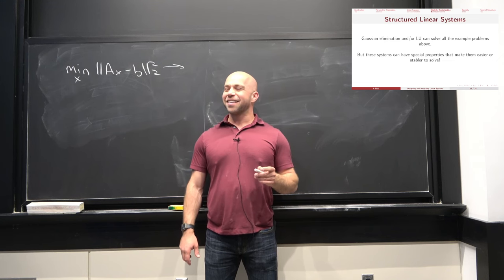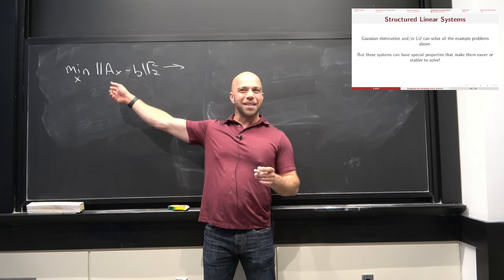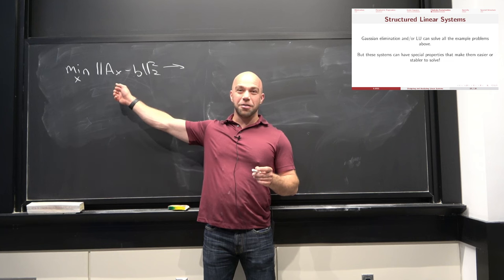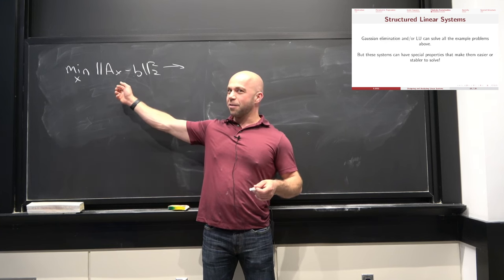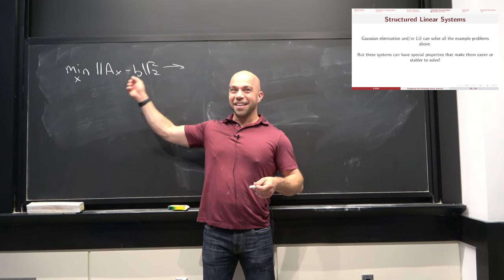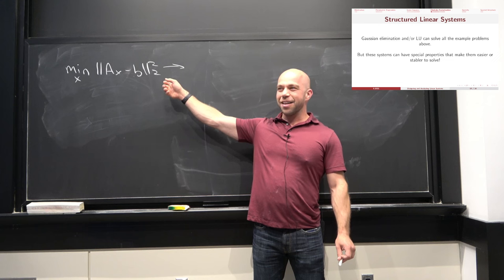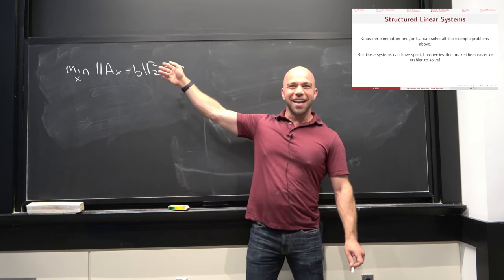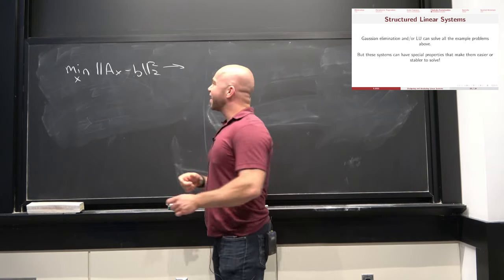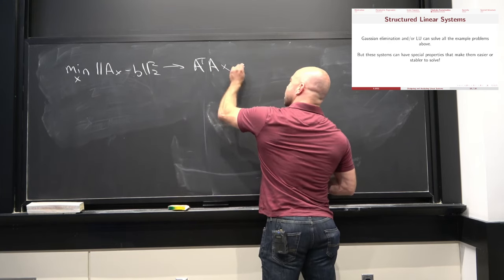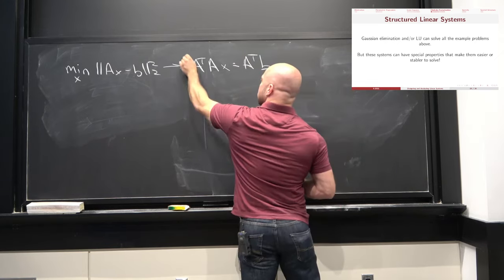How do we solve this problem if the only piece of software we have is code for Gaussian elimination? This thing can be solved with a linear system of equations. It's the normal equations. And what are the normal equations to recover x from A and B? A transpose A times x equals A transpose B. A may not be square, but A^T A is. This is a linear system of equations — we derived it by taking the derivative and setting it to zero. And now we can solve it with Gaussian elimination.